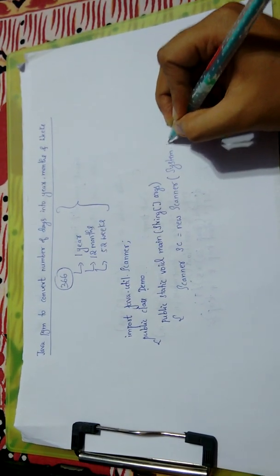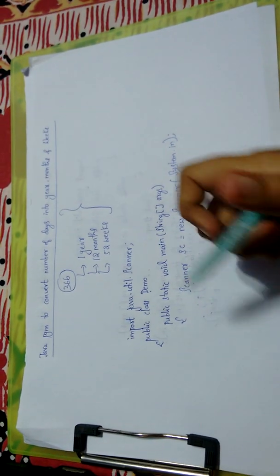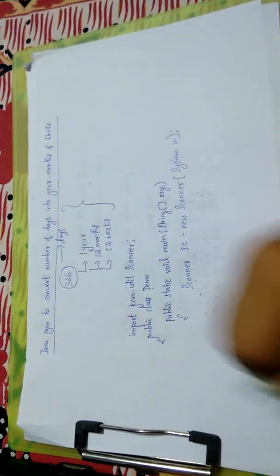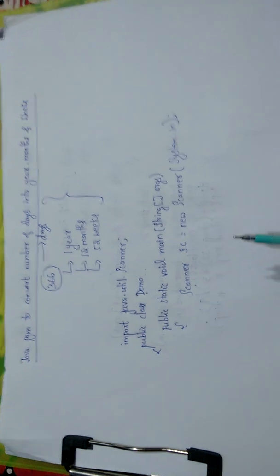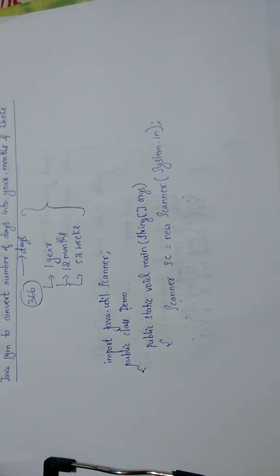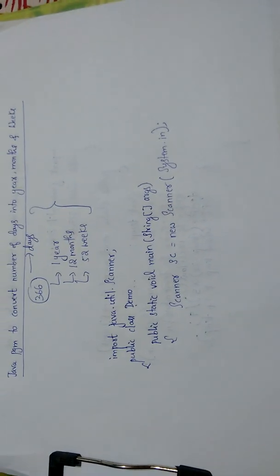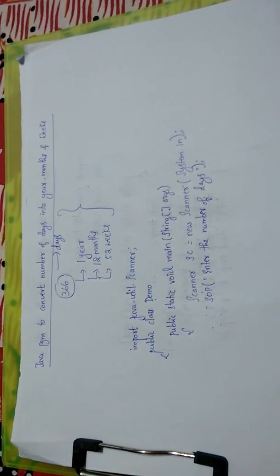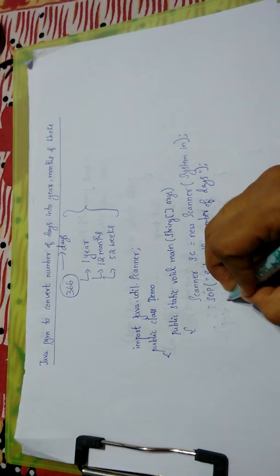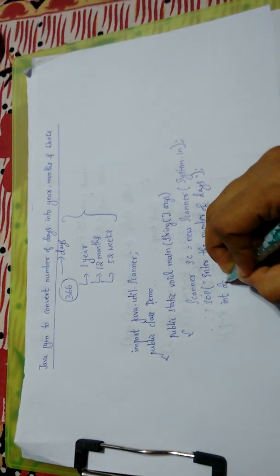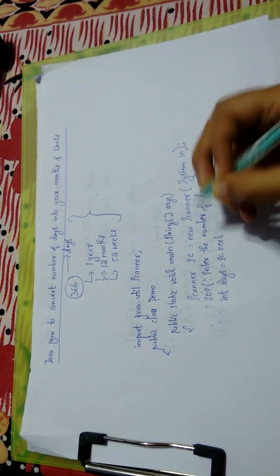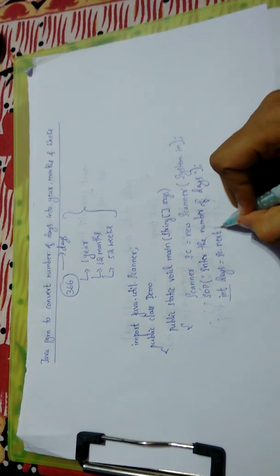system.in. You will take the number of days as input from the user, so I write it as 'Enter the number of days'. After you write this, you will read it. You can declare it here itself: inDays equals sc.next. It's of type integer, so I